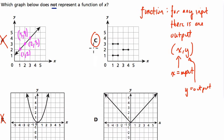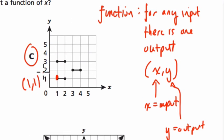But C is the answer, right? Why? Well, look at this example. We have this point, 1, 1, and this point right here, 1, 3. So there's one input, one with two different outputs, 1 and 3.